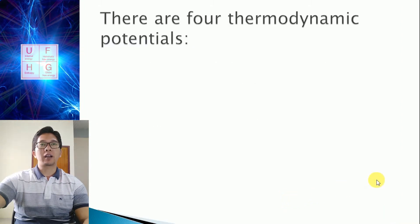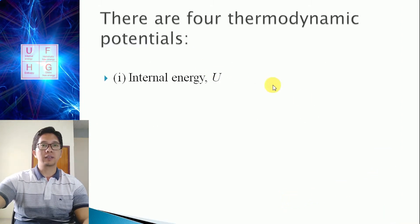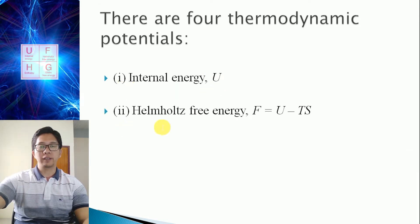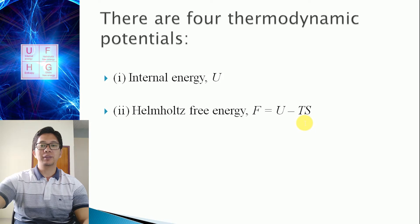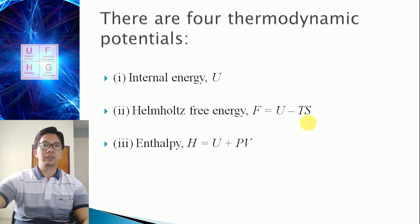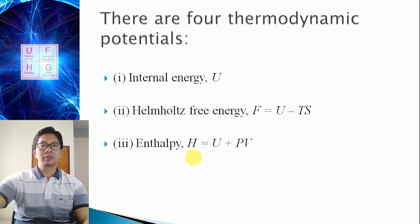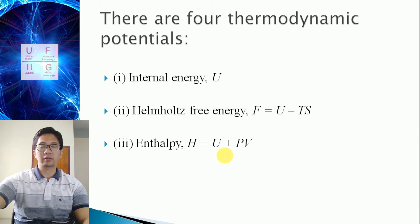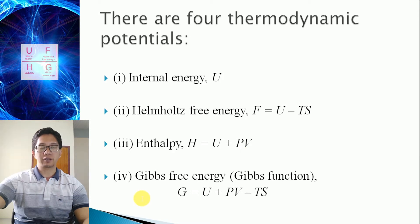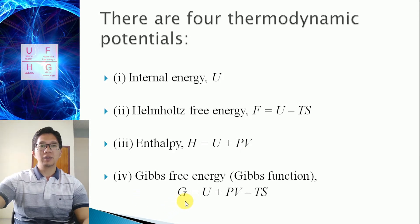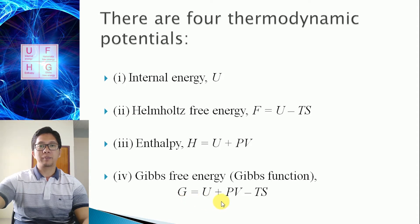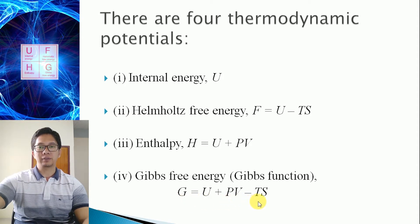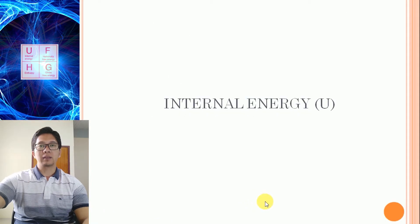Now there are four thermodynamic potentials. Number one is internal energy, given by U. Number two is Helmholtz free energy, given by F, equal to internal energy minus temperature into entropy. The third one is enthalpy, H, equal to internal energy plus the product of pressure and volume. The fourth one is Gibbs free energy or Gibbs function, given by G, equal to internal energy plus pressure into volume minus temperature into entropy.